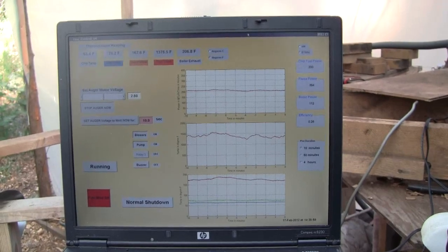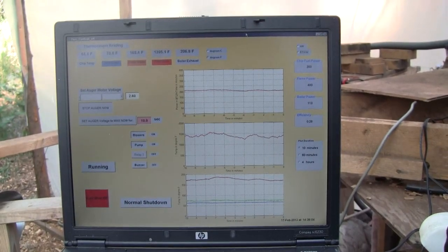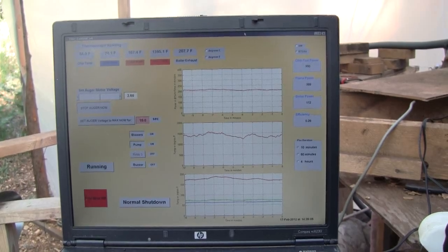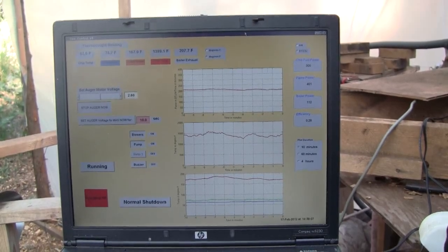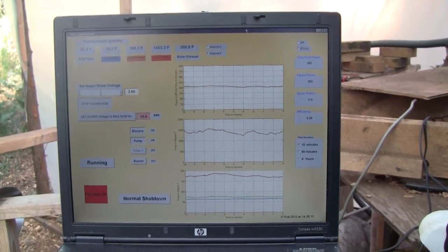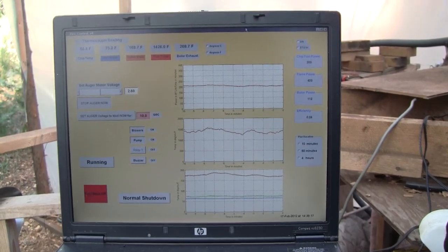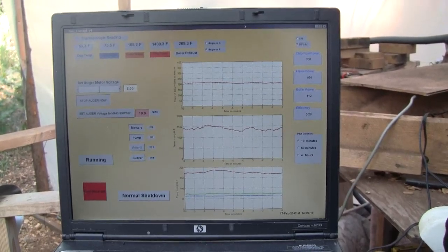The computer can change the fuel feed rate, it can monitor the flue temperature of the combustion exhaust gases and decide whether they are staying hot enough or not and so it can adjust the fuel rate if it wants them to be hotter or cooler.